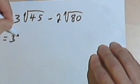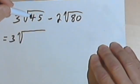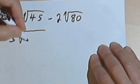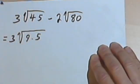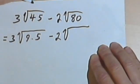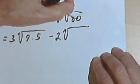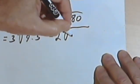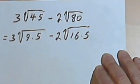We have 3 times the square root of 45. Looking for a perfect square that I can divide into 45, I'll use 9. So 45 is the same as 9 times 5. And I've got minus 2, my radical sign. And I need a perfect square that I can divide into 80. And the biggest square I can find would be 16.